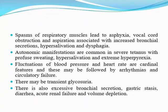The spasm may also affect the respiratory muscles, causing vocal cord obstruction and asphyxia, as well as dysphagia, excessive bronchial secretion, and excessive salivation. Autonomic features include fluctuating blood pressure, hyperpyrexia, arrhythmia, heart failure, excessive gastric secretion, diarrhea, acute renal failure, and volume depletion. These are all complications of tetanus.